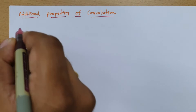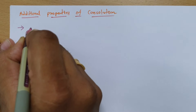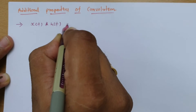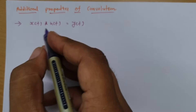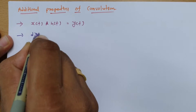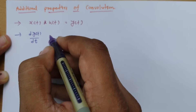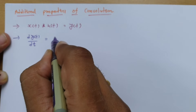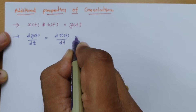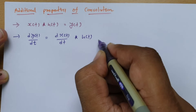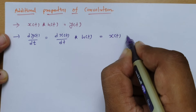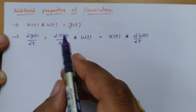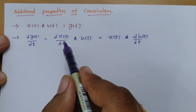Let us look at these properties. First, consider that the convolution of x(t) and h(t) equals y(t). In that case, if you differentiate y(t) with respect to time, one can apply this differentiation to either of the two signals — you can differentiate x(t) and convolve with h(t), or take x(t) as-is and differentiate h(t) with respect to time. This differentiation property can be applied to either signal.